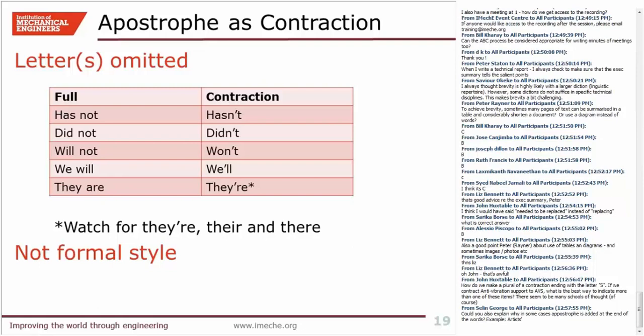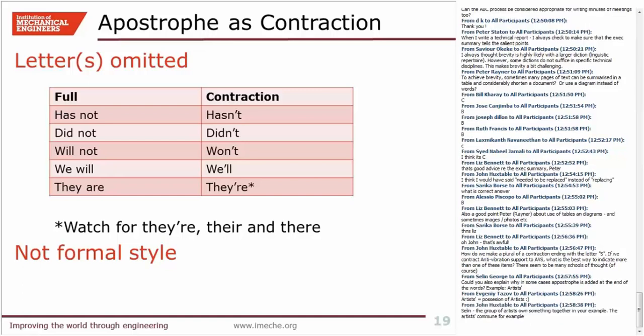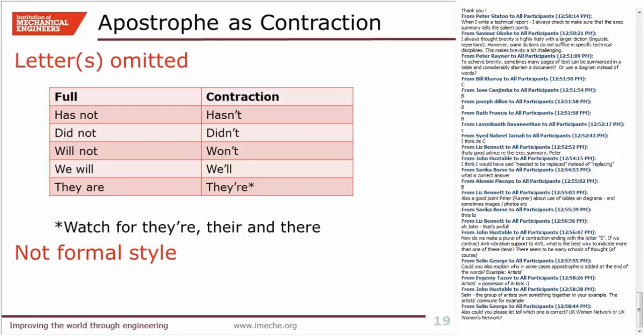Just be careful with 'they're,' because there are three words that all sound the same: 'their,' T-H-E-I-R, is the possessive pronoun where something belongs to them; 'there,' which could be an adverb as in 'it lived there'; and 'they're,' which is the contraction of 'they are.' While contractions are common in speech, they're not considered appropriate style in formal writing. In a formal report or formal document, you shouldn't really use those contractions.